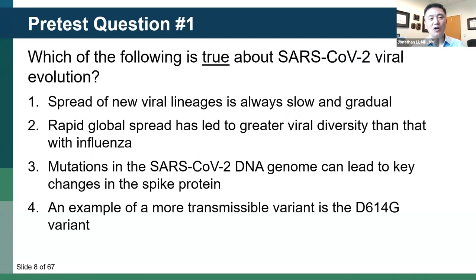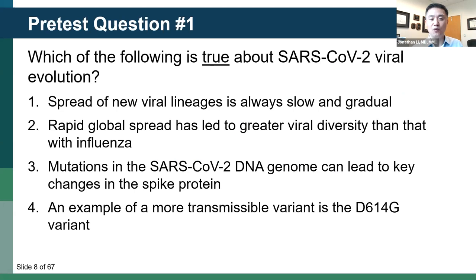Let's start with the first pre-test question: Which of the following is true about SARS-CoV-2 viral evolution? Is it that the spread of new viral lineages is always slow and gradual? That rapid global spread has led to greater viral diversity than with influenza? That mutations in SARS-CoV-2 DNA genome can lead to key changes in the spike protein? Or that an example of a more transmissible variant is the D614G variant? Please select your answer now. We'll be taking the same question as a post-test at the end of the webinar.